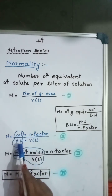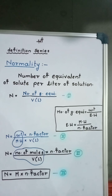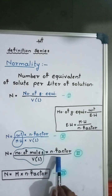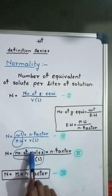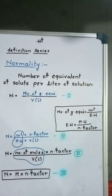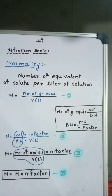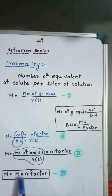Here, weight divided by molecular weight is nothing but the number of moles. This gives the formula for normality in the form of number of moles. Since number of moles divided by volume in liters is nothing but molarity, the formula can also be expressed in the form of molarity.